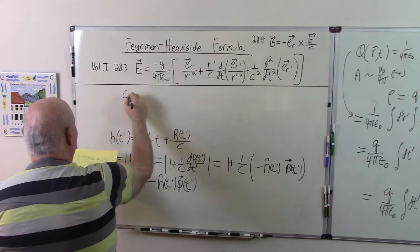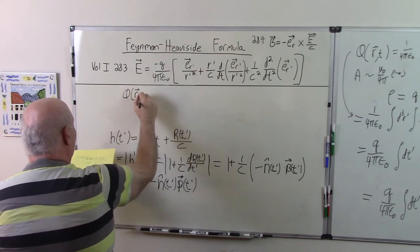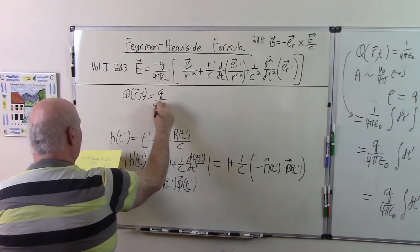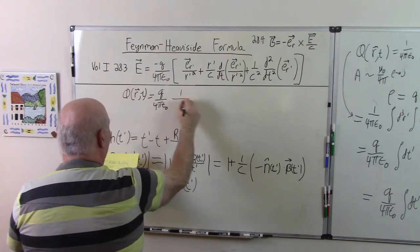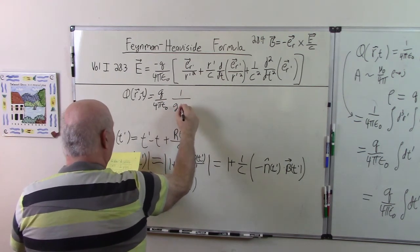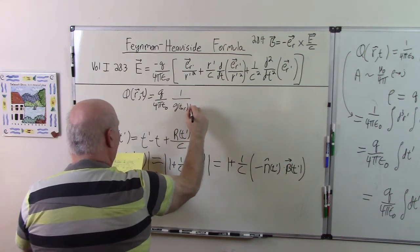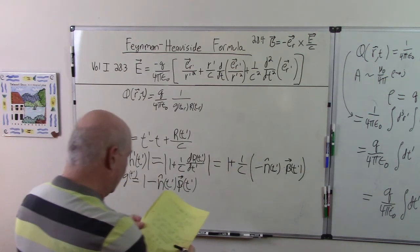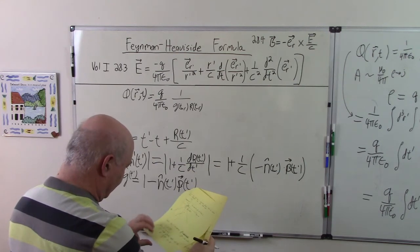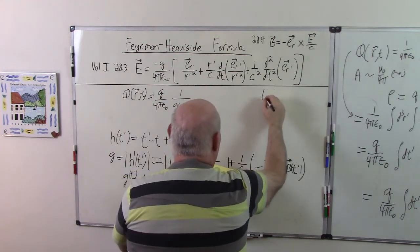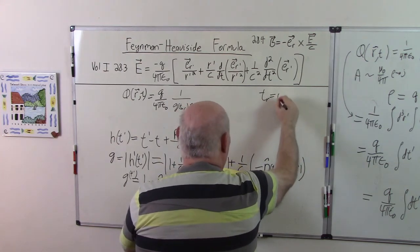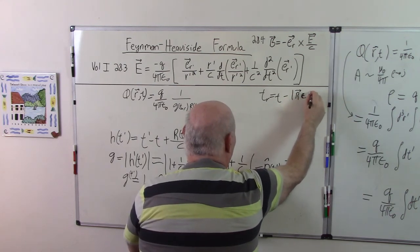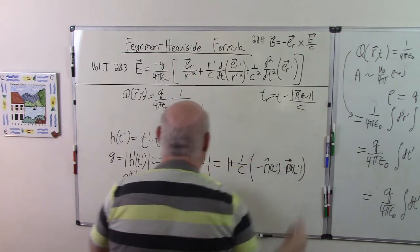The famous potential is φ of r comma t is equal, from a moving point charge, q over 4π epsilon_0, 1 over g at t_r, and r at t_r. And I'll just write down the definition of t_r again. Again, this is the retarded time. It's equal to t minus |r of t_r|/c.